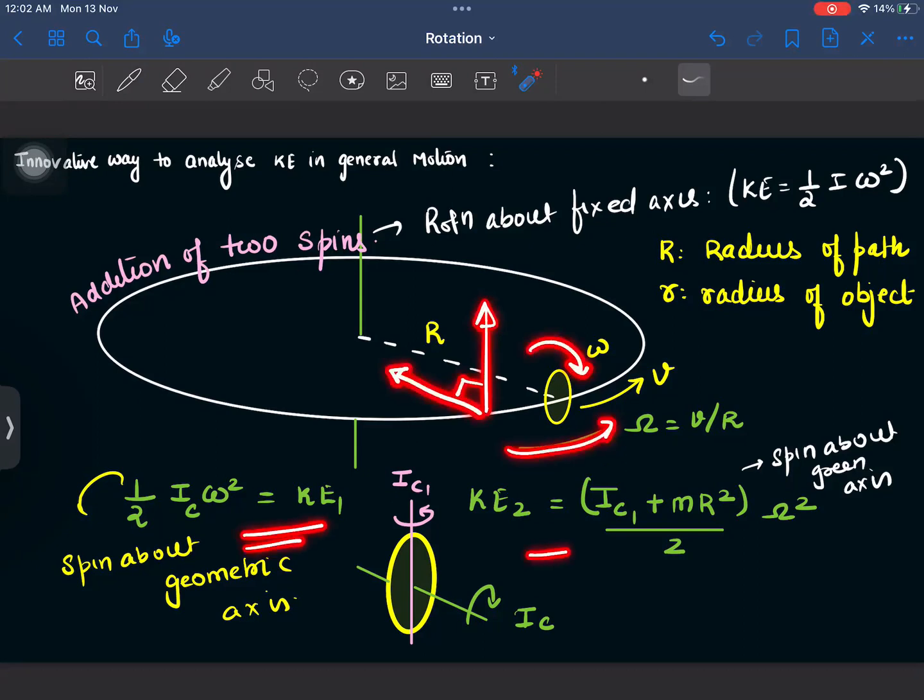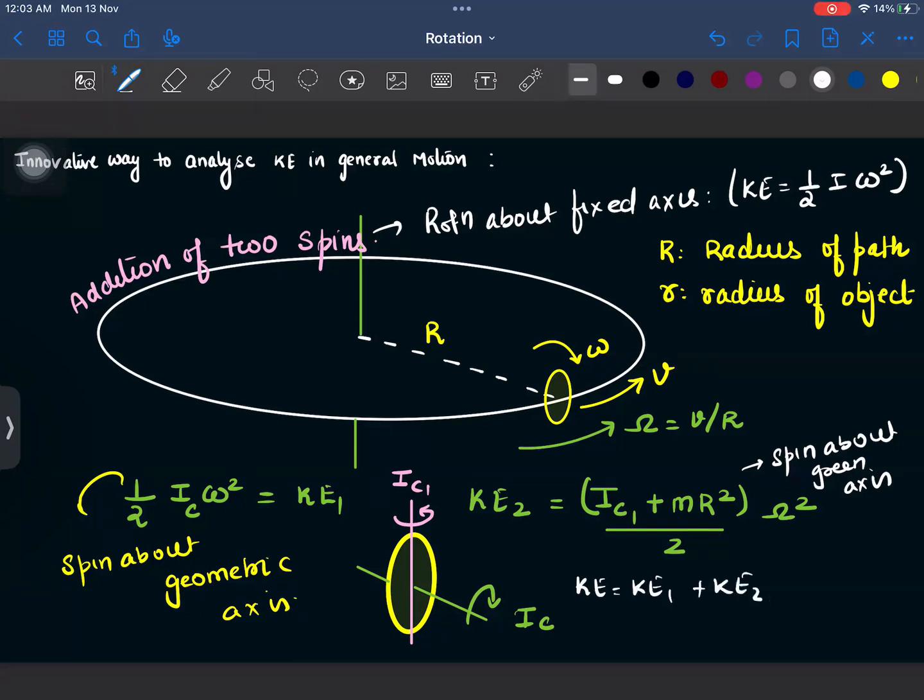And therefore, these are two motions which are perpendicular to each other. And therefore, they can be considered separately as well. So the kinetic energy of the motion, that is the net kinetic energy, can be written as KE1 plus KE2.